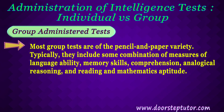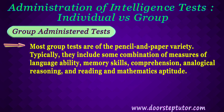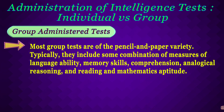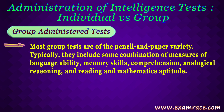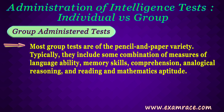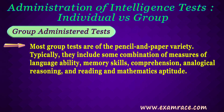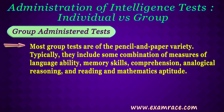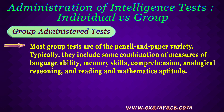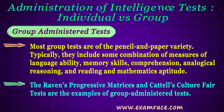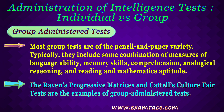Group administered intelligence tests are similar in structure and format to group administered achievement tests — they measure, in fact, similar areas. Group intelligence tests usually have different levels that are used with individuals in certain grades. Typically, they include some combination of measures of language abilities, memory skills, comprehension, analogical reasoning, and reading and mathematics aptitude. The Raven's Progressive Matrices and Cattell's Culture Fair Test are examples of group administered tests.